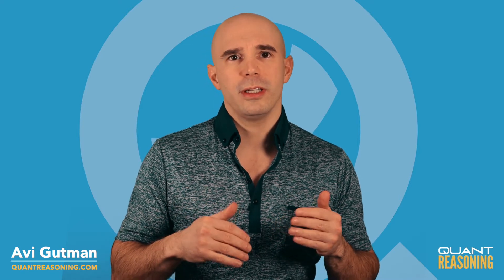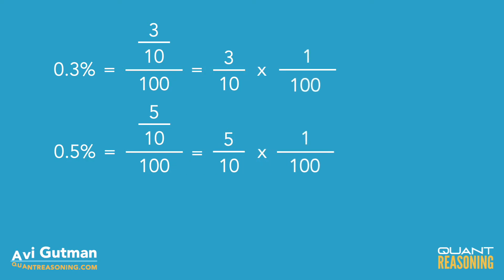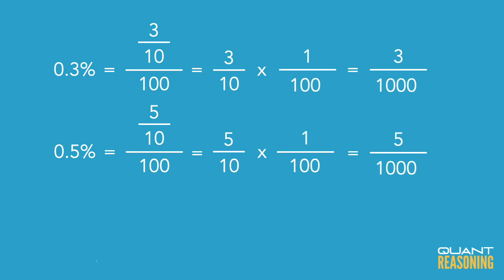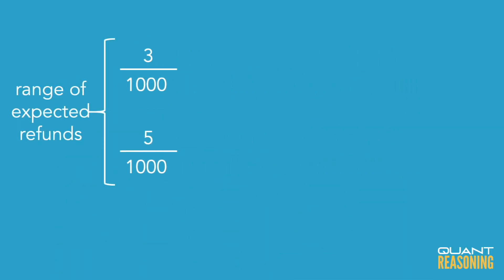So what's 0.3 over 100 or what's 0.5 over 100? It's just going to be 3 over 1,000 or 5 over 1,000. So let's just work with the top of the range. We'll take that 5 over 1,000 and multiply it by the total number of units, which is 20,000. We can reduce the three zeros from top and bottom and we're left with just 5 times 20, or 100.